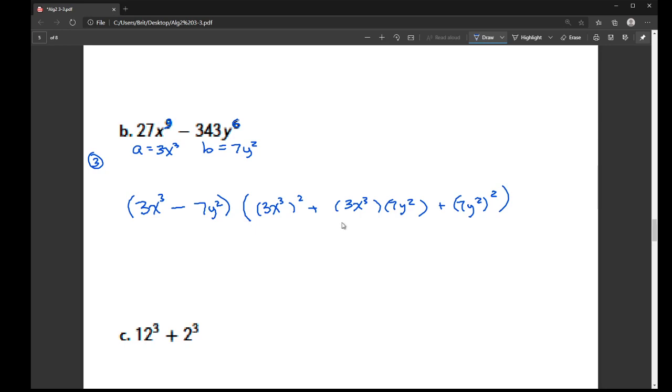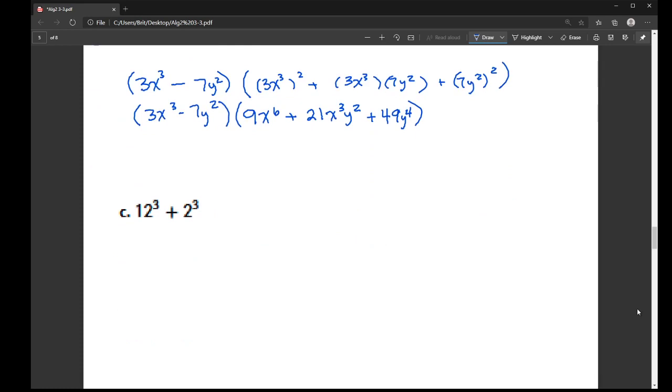And then we have to go through our cleanup step on that second set of parentheses. Okay, so there's our first one. Now here, 3 squared is 9. And X cubed squared is X to the 6th. And then 3 times 7 is 21. X cubed, Y squared. And then here, 7 squared is 49. And then Y squared is Y to the 4th.